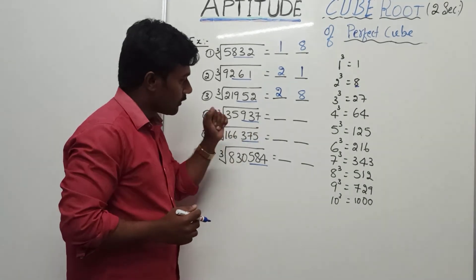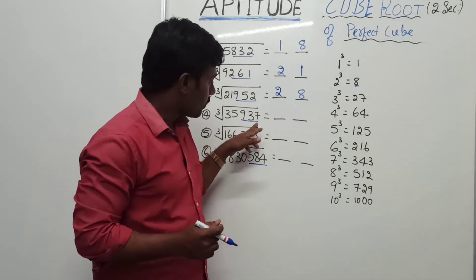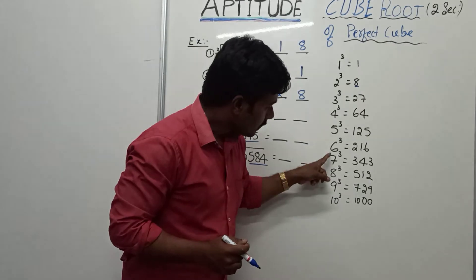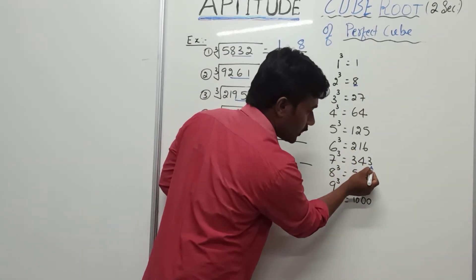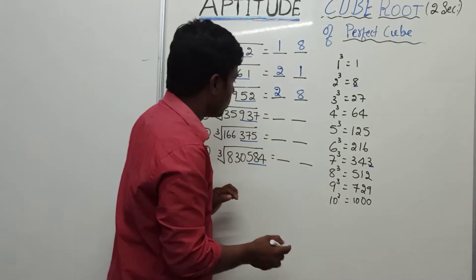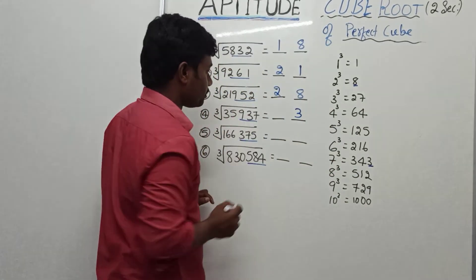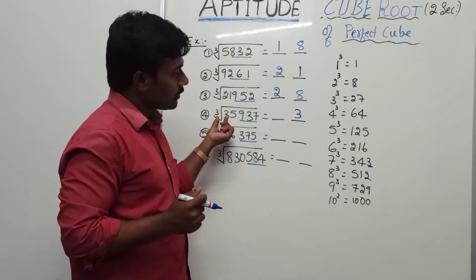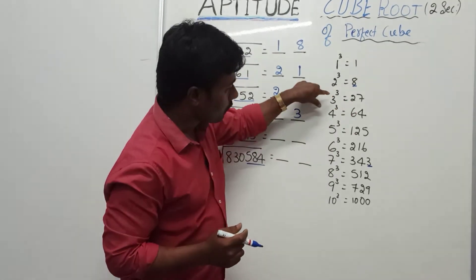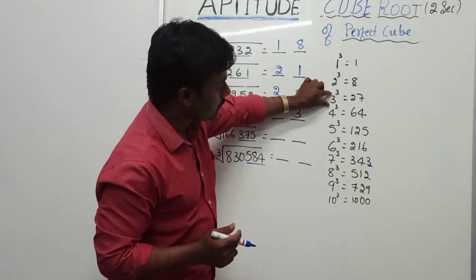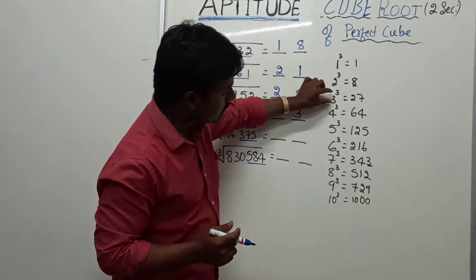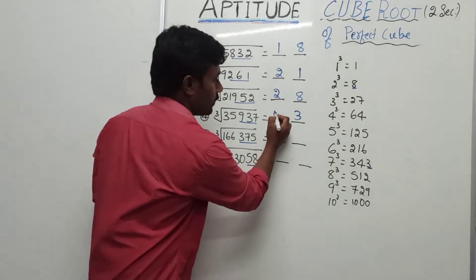Next, here 7. Cube root of, sorry, perfect cube of 7 is 343. Here, you have to consider only the last digit. Write in the 3. Next, 35. 35 lies between 27 and 64, means 3 cube and 4 cube. What is the base of the minimum cube? 3. Write it, 33.